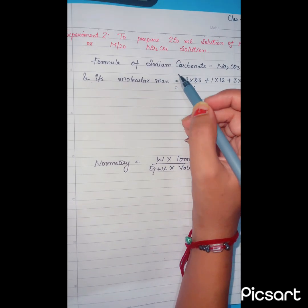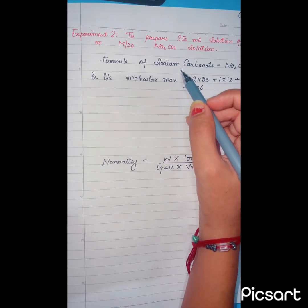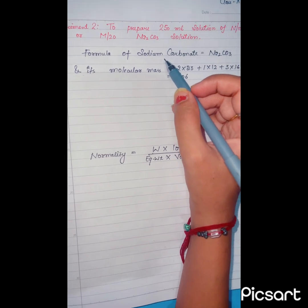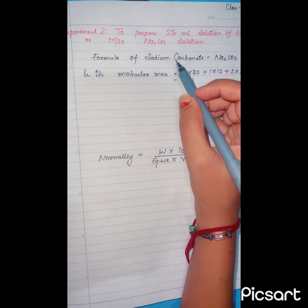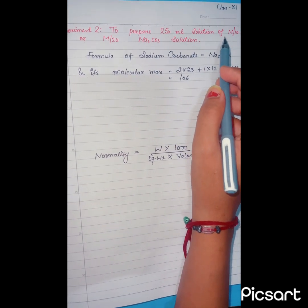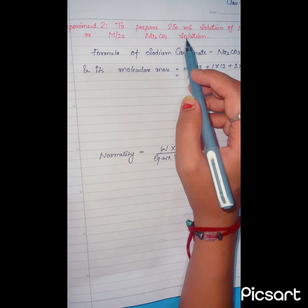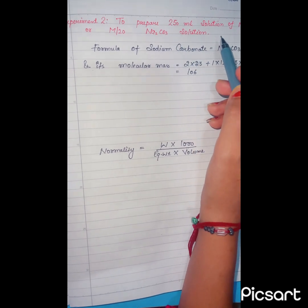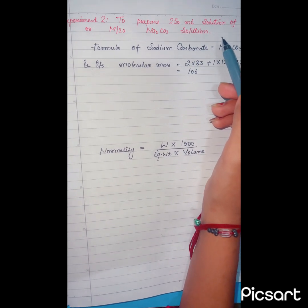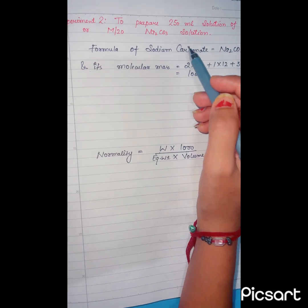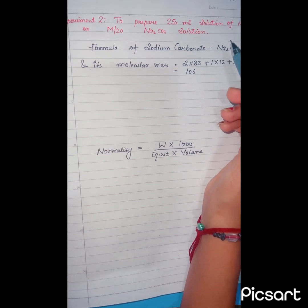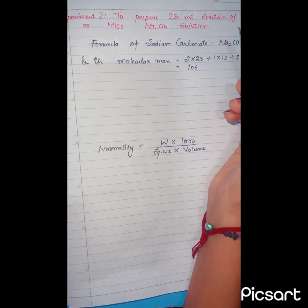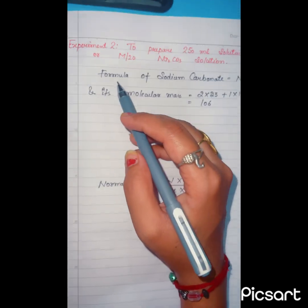Hello students, today we are performing the volumetric analysis class 11th experiment 2 to prepare the 250 ml solution of N by 10 or M by 20 Na2CO3 solution. It means N by 10 normality and M by 20 molarity sodium carbonate solution from the solid crystals of sodium carbonate.